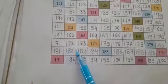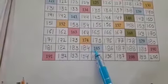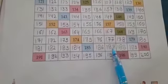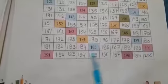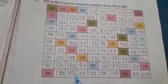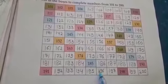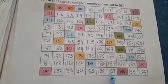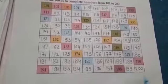Continue: 181, 182, 183, 184, 185, 186, 187, 188, 189, 190. Then 191, 192, 193, 194, 195, 196, 197, 198, 199, 200.